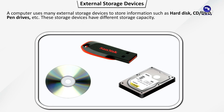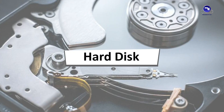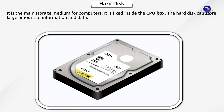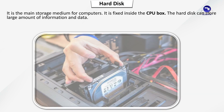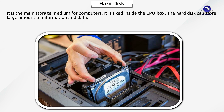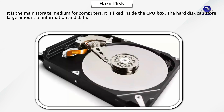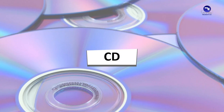A computer uses many external storage devices to store information, such as hard disk, CD, DVD, pen drives, etc. These storage devices have different storage capacities. The hard disk is the main storage medium for computers. It is fixed inside the CPU box. The hard disk can store a large amount of information and data.